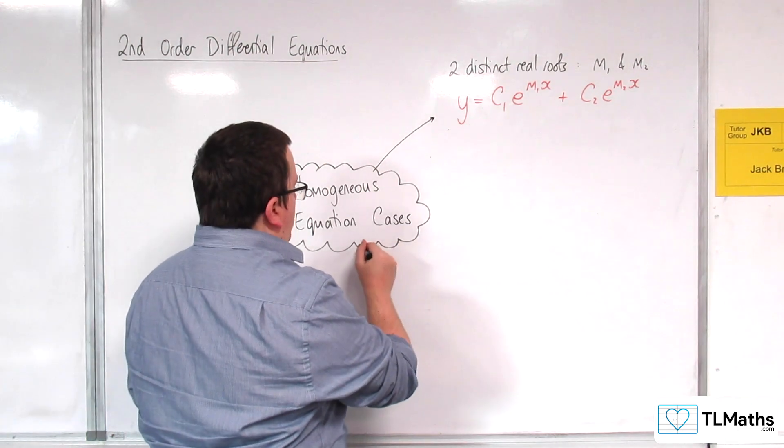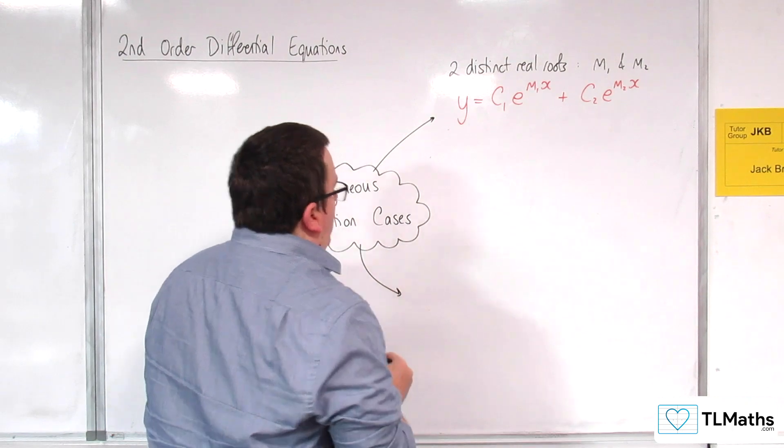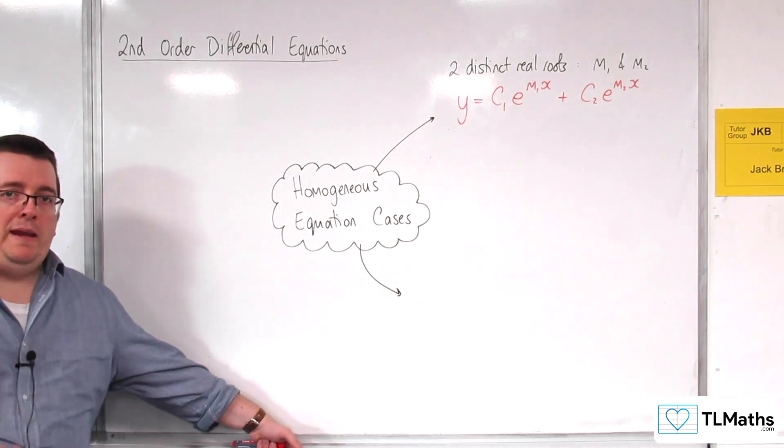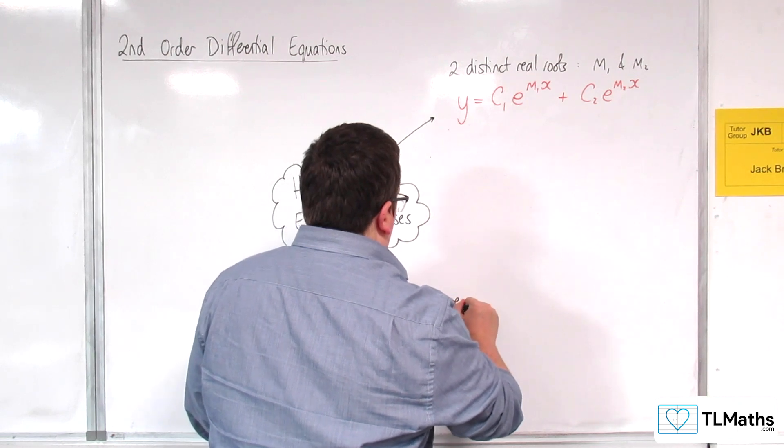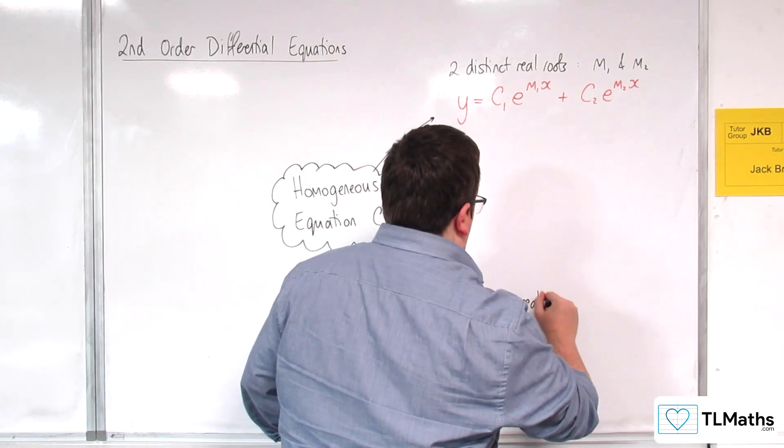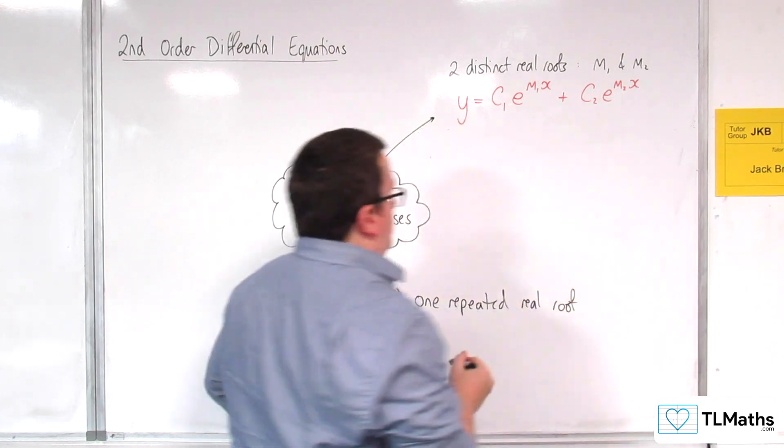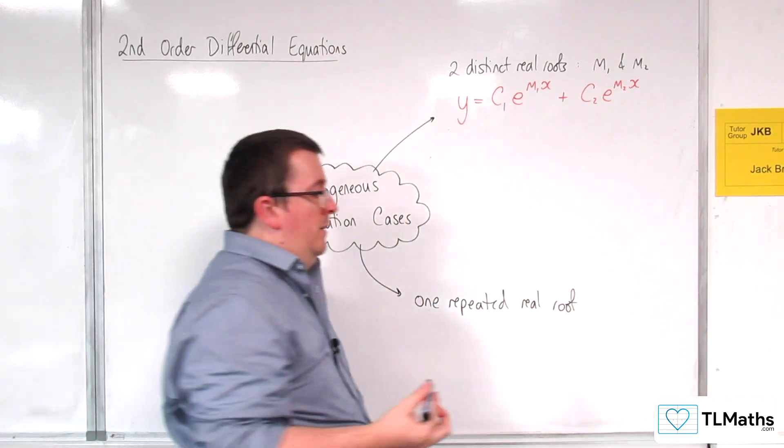Another possibility is that we get one repeated real root. So one repeated real root, let's call that m.